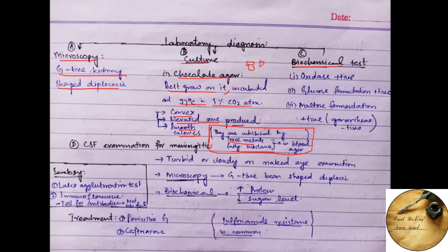Now coming towards the biochemical test. So Neisseria meningitidis is oxidase positive. It ferments glucose. It also ferments maltose. In contrast, Neisseria gonorrhoeae cannot ferment maltose.